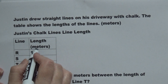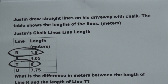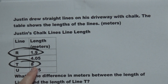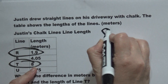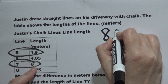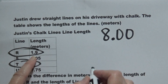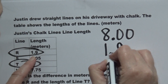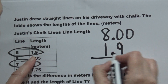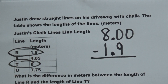So we have line R and line T — that's trying to trick you. We know that T is 8 wholes, so it's going to be 8.00. And then we know R is 1.9. As I tell my students: don't be lazy — line up the decimals, baby.